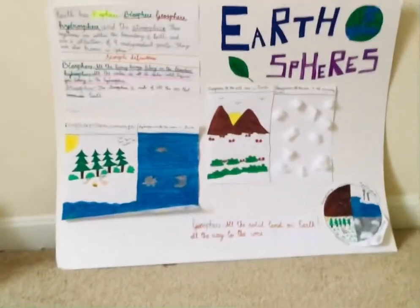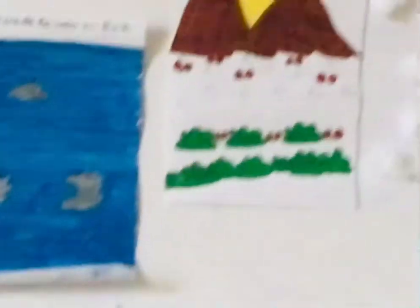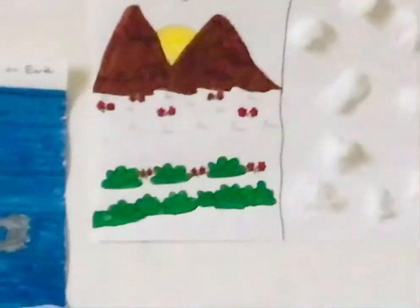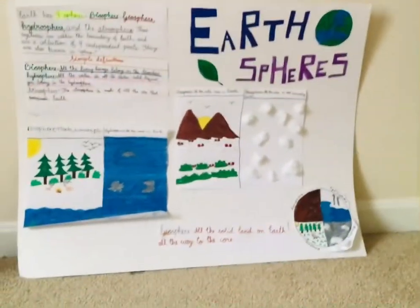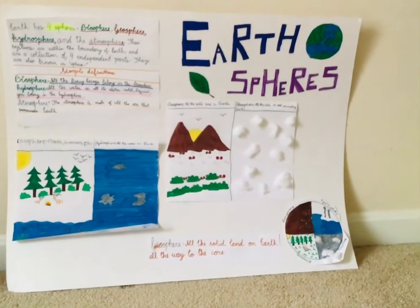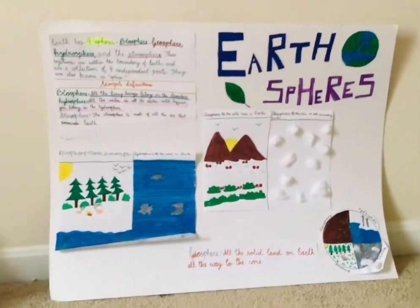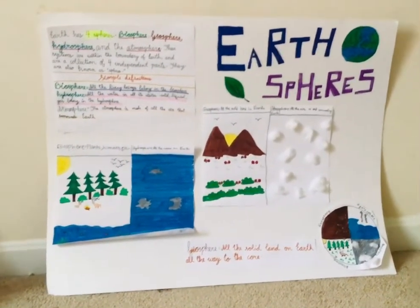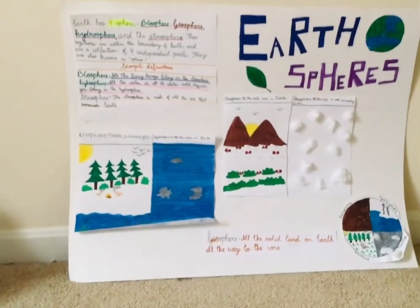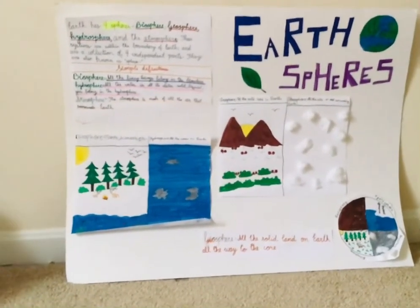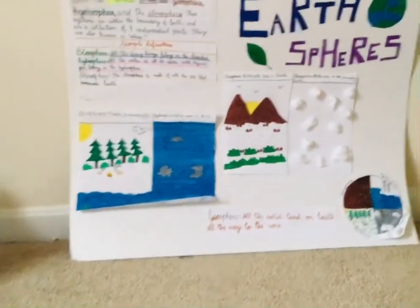Now, the geosphere contains all the solid land on Earth, all the way to the core — so that's a lot of land. The diagram shows mountains and plains, for example. The biosphere overlaps the geosphere as well, because most living beings, including humans, live on land — we're basically living on the geosphere. Here is the small combined diagram showing the geosphere, hydrosphere, biosphere, and atmosphere together.